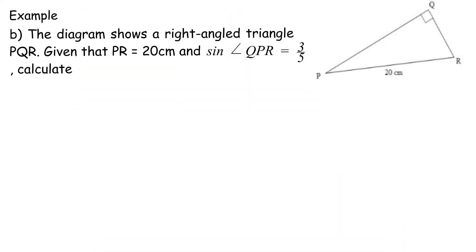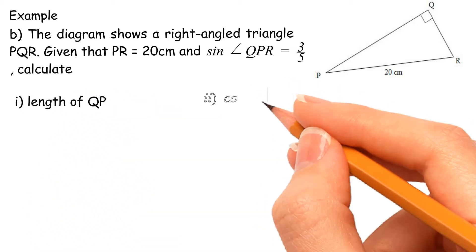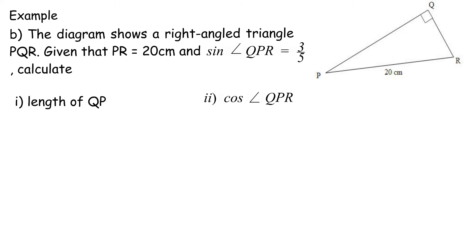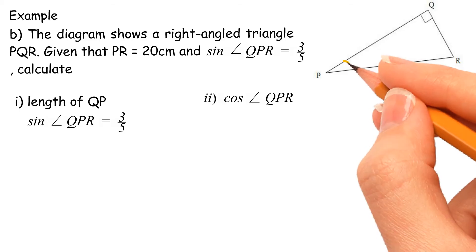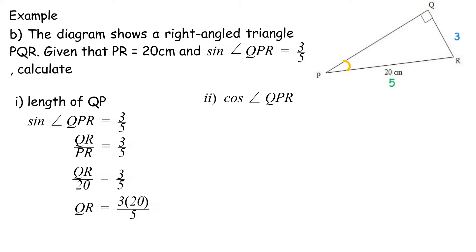Example B: The diagram on the right shows a right-angled triangle PQR. Given that PR equals 20 centimeters and sin angle QPR equals 3 over 5, calculate: (1) length of QR, (2) cos angle QPR. Solution 1: sin angle QPR equals 3 over 5, so QR over PR equals 3 over 5, QR over 20 equals 3 over 5, QR equals 3 times 20 over 5, equals 12 centimeters.